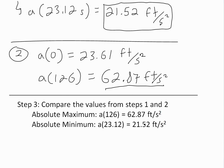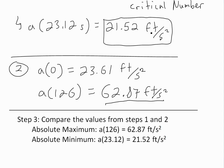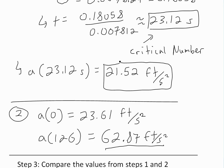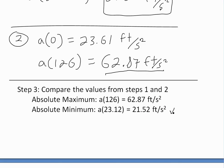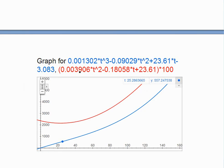The smallest is at this critical number when the derivative is zero, or when the rate of change of acceleration (the jerk) is zero. So this is at 21.52, which is less than the initial acceleration of 23.61, and that is the absolute minimum.